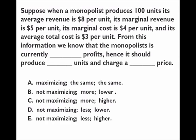Let's take one thing at a time. First, let's find out if they're maximizing profits. They maximize profits where marginal revenue equals marginal cost. Here marginal revenue is $5 and marginal cost is $4, so clearly they're not maximizing profits. That eliminates option A.